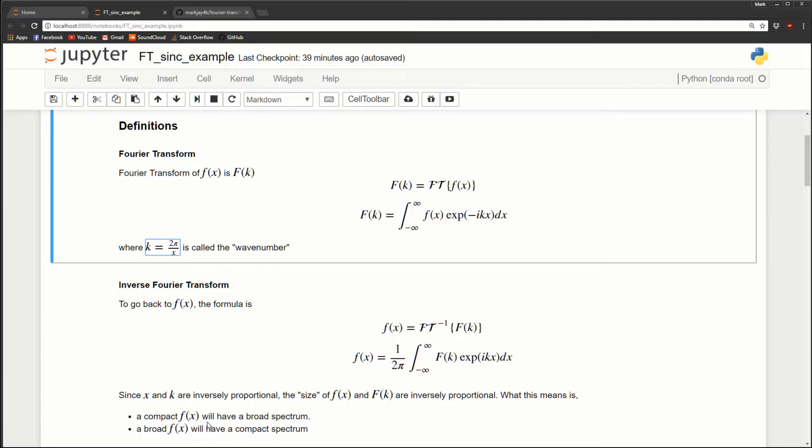If we have a broad function in x, that's going to be made of a lot of lower frequency components, so it's going to look very compact in the frequency space. That's the key relationship you want to keep in mind. Something that's compact in x is going to be broad in k and something that's broad in x is going to be very compact in k.